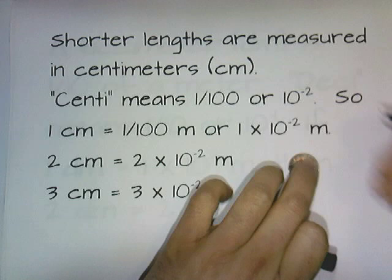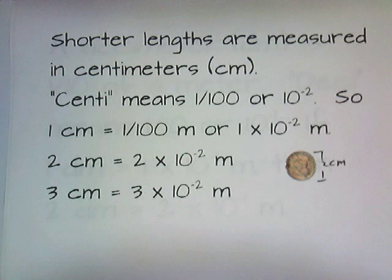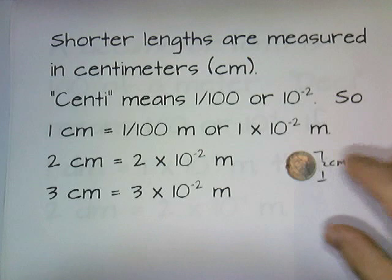A nickel is about two centimeters in diameter. So from here to here, that's about two centimeters. A nickel is two centimeters in diameter.